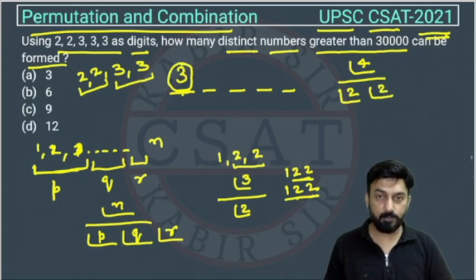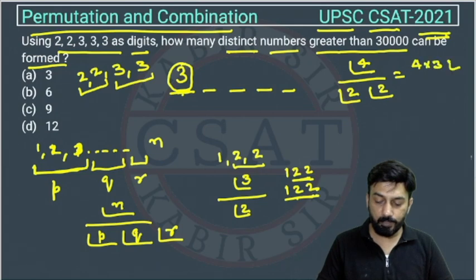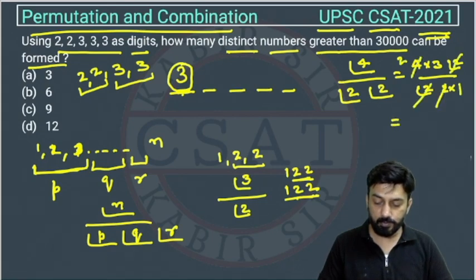And this is also R of same. So this is again factorial 2. So this will become factorial 4 divided by factorial 2 into factorial 2. And we will open this factorial. This factorial will cut this factorial. This 2 will cut this 4 two times. So this is 6.